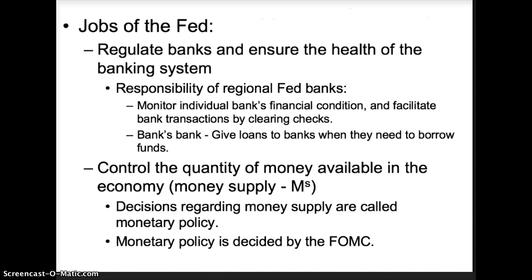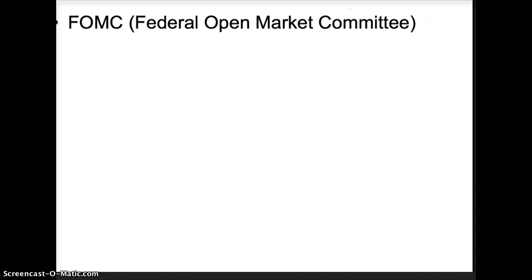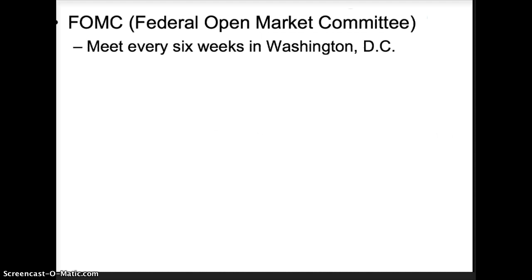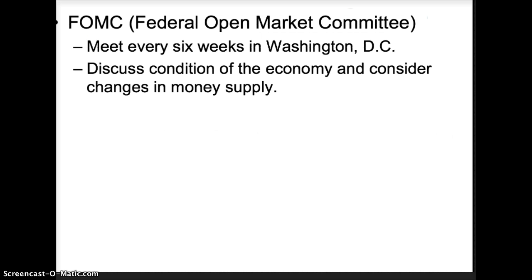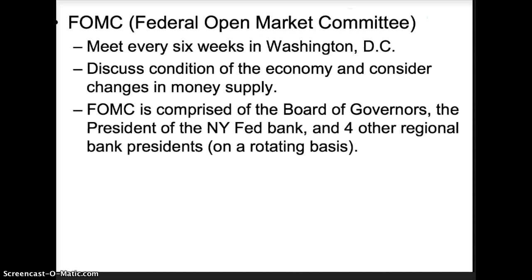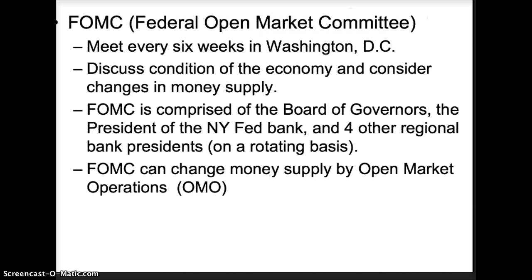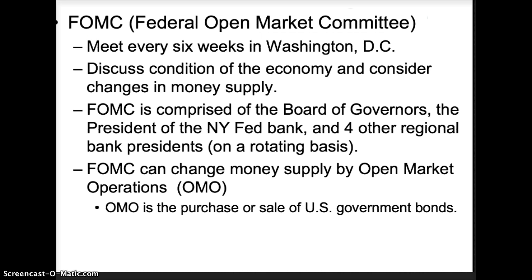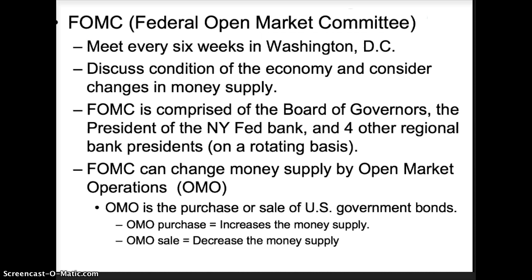Monetary policy is decided by the FOMC — the Federal Open Market Committee. The FOMC meets every six weeks in Washington D.C., discusses the condition of the economy, and considers changes to money supply. The FOMC is comprised of the Board of Governors, the President of the New York Regional Fed Bank, and four other regional bank presidents on a rotating basis. The FOMC can change money supply by conducting open market operations, or OMO for short — the purchase or sale of a U.S. government bond. When the FOMC purchases bonds, they increase money supply; when they sell bonds, they decrease the money supply.